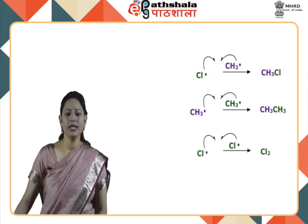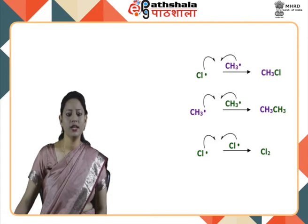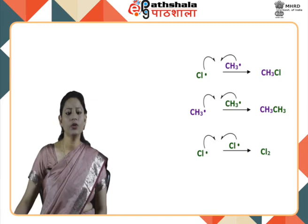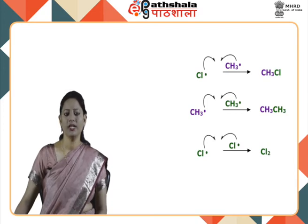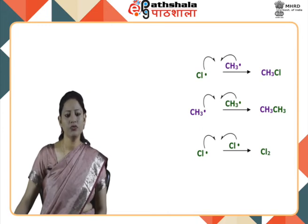The final step is the chain termination step, in which two reactive radicals combine together. A chlorine free radical combines with a methyl free radical to form methyl chloride. Two methyl free radicals combine to form an ethane molecule. Two chlorine free radicals combine to form a chlorine molecule.